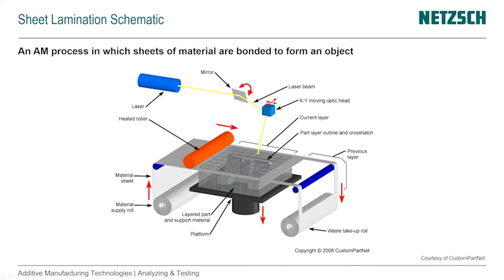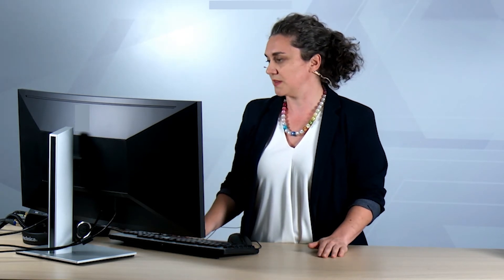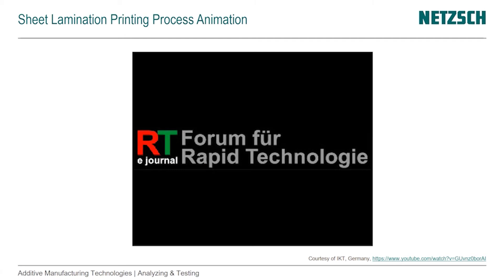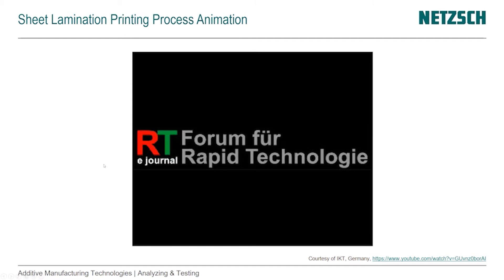The crosshatch — those small squares — is required so that we can take the support material apart after the print is complete. We also have a heated roller: once the adhesive is applied and the paper is rolled over, the heated roller bonds the two paper layers together. Here is a video by the IKT, the plastics institute in Stuttgart at the University of Stuttgart, which shows how the process works.